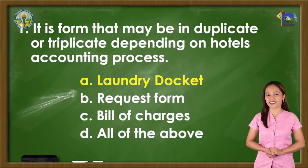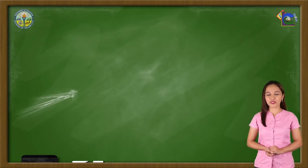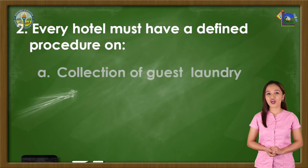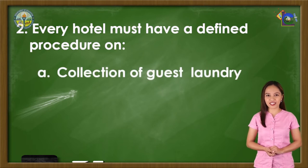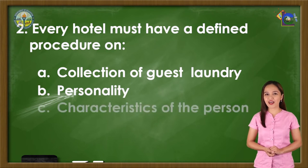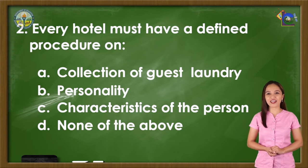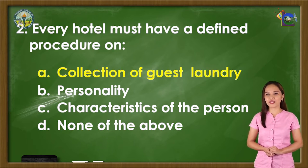Number 2: Every hotel must have a defined procedure on — A. Collection of guest laundry, B. Personality, C. Characteristic of the person, or D. None of the above. The correct answer is letter A, Collection of guest laundry.